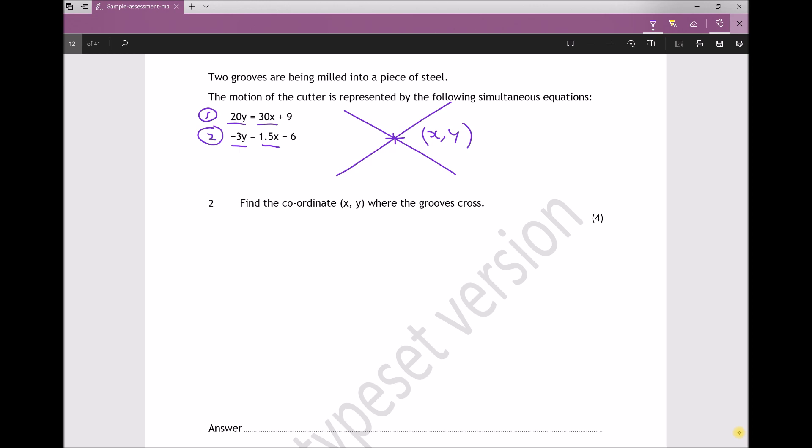We'll then have 30x in equation 1 and 30x in equation 2. So I'm going to write 20 times equation 2 and multiply each term in equation 2 by 20. Minus 3y times 20 gives me minus 60y. 1.5x times 20 gives me 30x, and minus 6 times 20 is minus 120. I'm calling that equation 3.